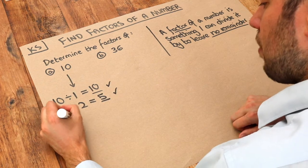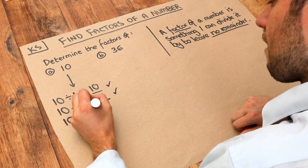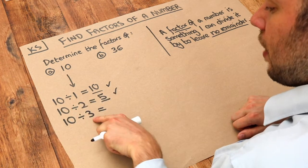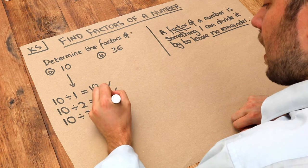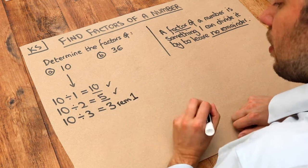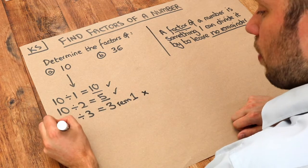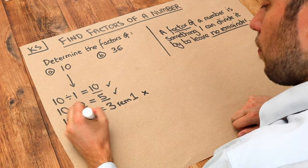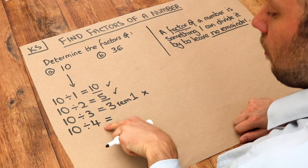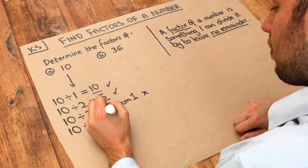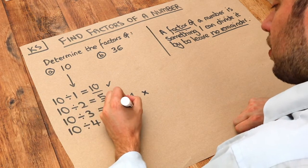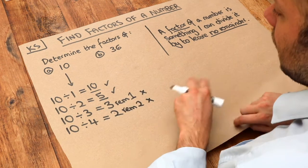Can we divide 10 by 3? Well, 3 goes into 10 three times, however we get a remainder of 1, so 3 is not a factor of 10. Let's try one more: 10 divided by 4. Well, 4 goes into 10 twice with a remainder of 2, so it's not a factor.